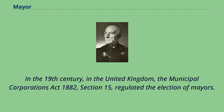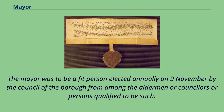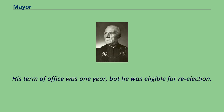In the 19th century, in the United Kingdom, the Municipal Corporations Act 1882, Section 15, regulated the election of mayors. The mayor was to be a fit person elected annually on the 9th of November by the council of the borough, from among the aldermen or councillors or persons qualified to be such. His term of office was one year, but he was eligible for re-election.